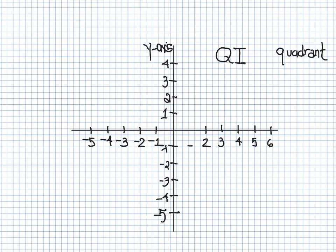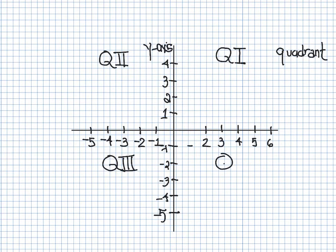Quadrant I is up on the right-hand side because that's where both X and Y are positive. Then, instead of going clockwise as you might expect, you go counterclockwise — so Quadrant II is upper left, Quadrant III is lower left, and Quadrant IV is lower right. Rather than memorizing positive/negative sign combinations for each quadrant, just draw your number line, start in the positive area, and go counterclockwise — that's easier.